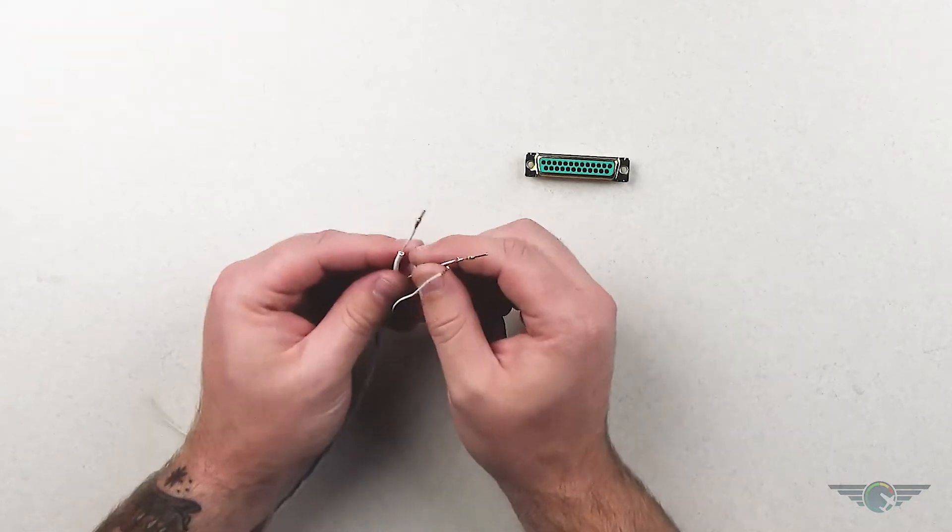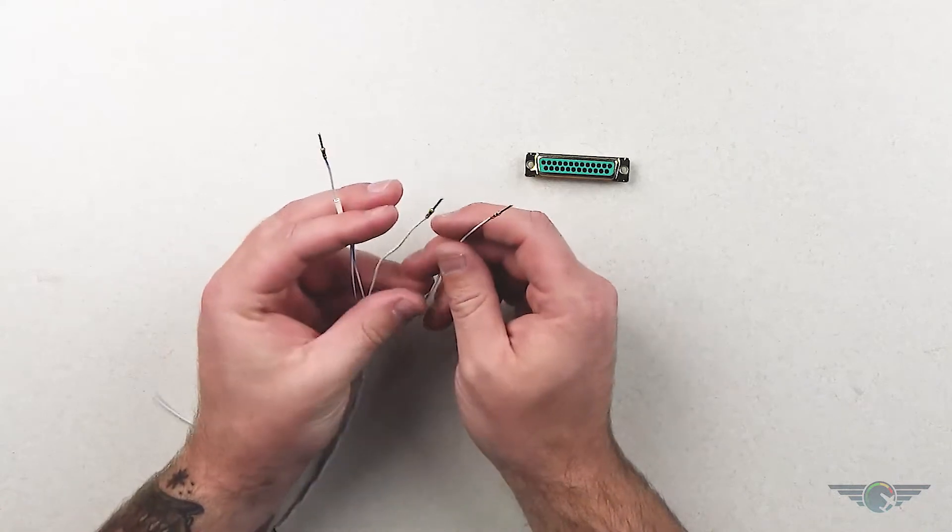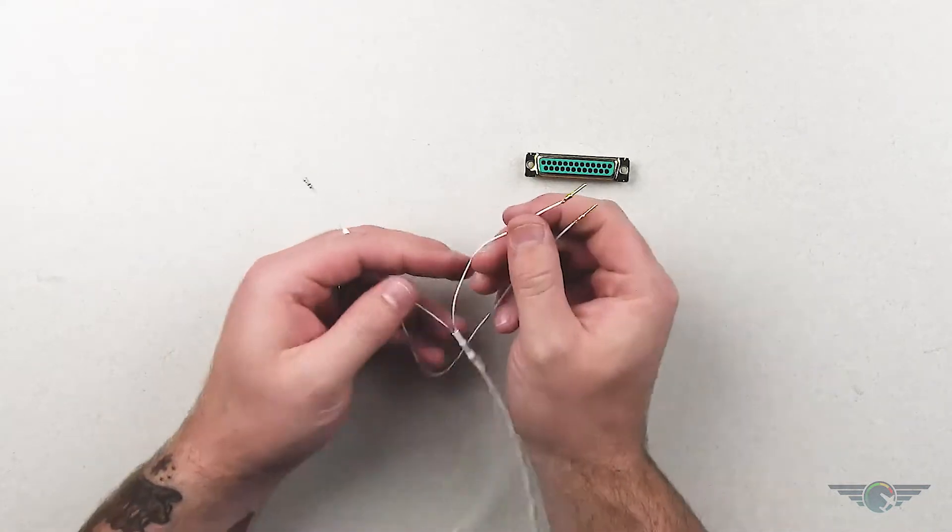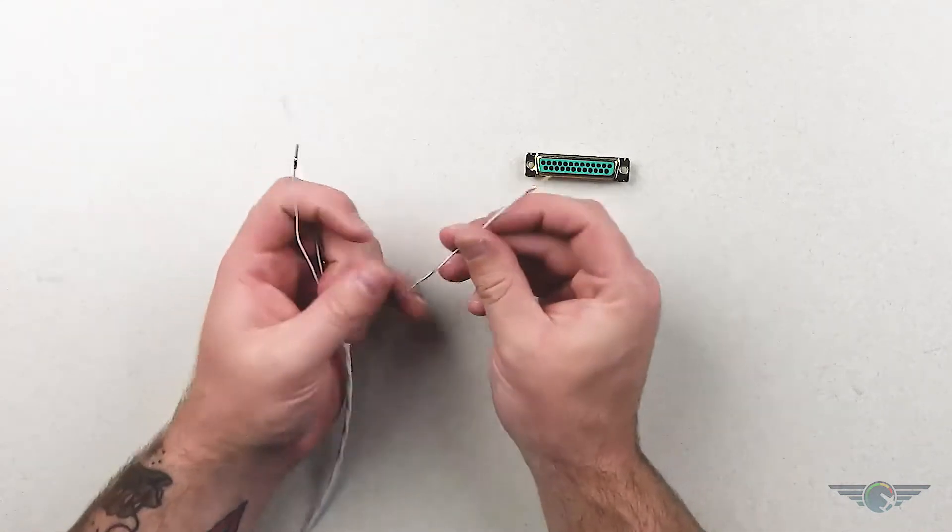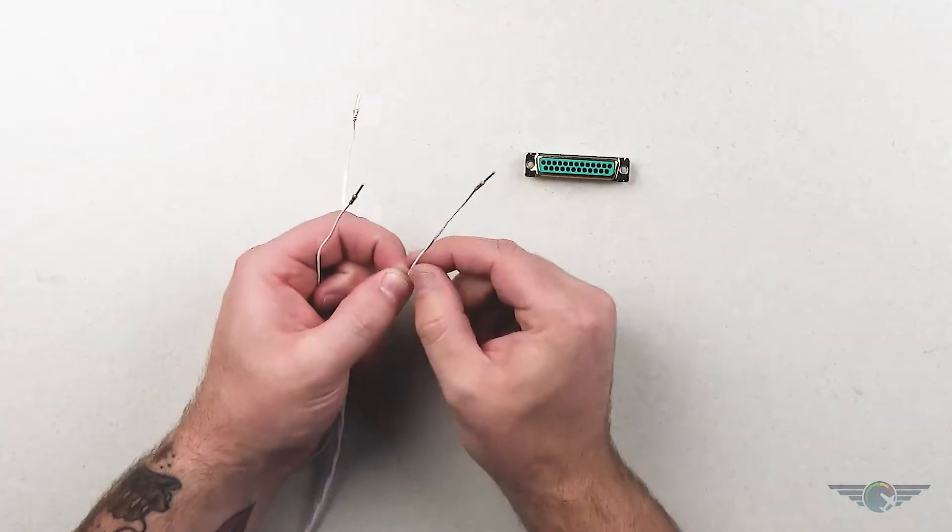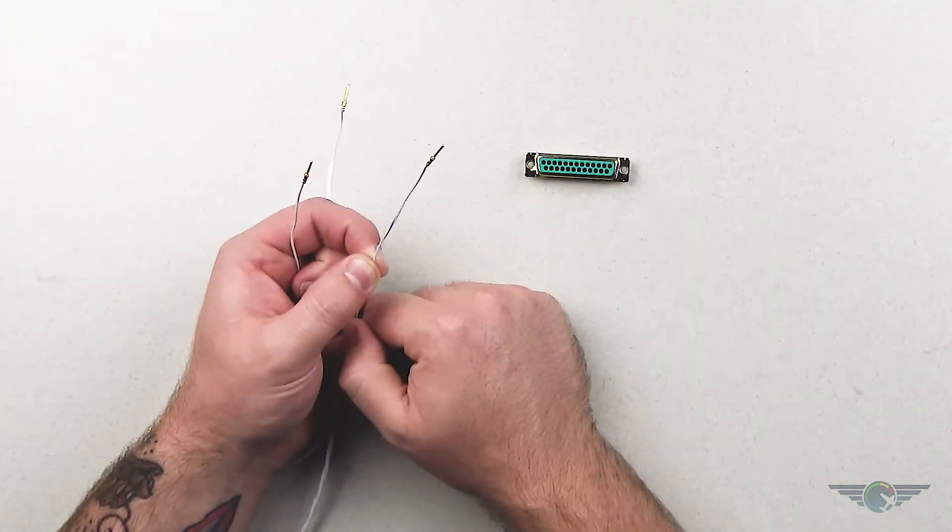Just for today's sake let's say our CAN bus high terminates to pin 5, our CAN bus low terminates to pin 10, and our CAN bus terminating resistor is on pin 15.